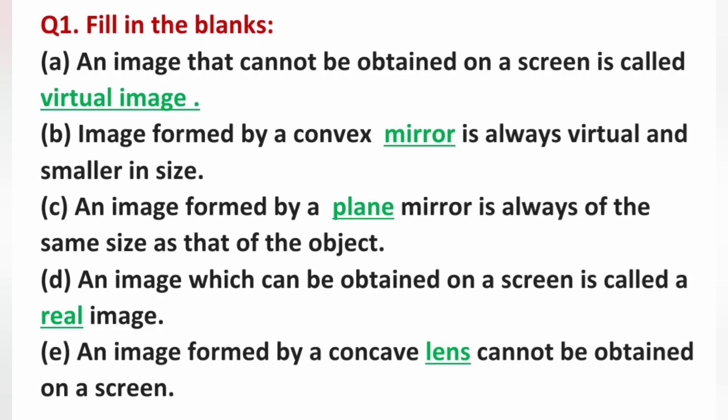C. An image formed by a plain mirror is always of the same size as that of the object. It is a plain mirror, kyunki joh plain mirror image form karta hai, woh bilkul same size ki hoti hai, jitna size object ka hota hai.